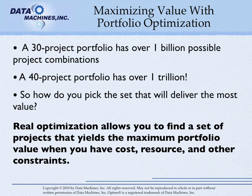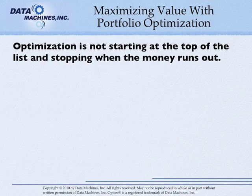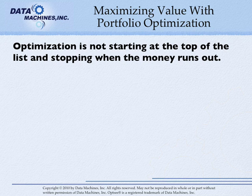Real optimization allows you to find a set of projects that yields the maximum portfolio value when you have cost, resource, or other constraints. Some project portfolio management applications optimize against cost by simply starting at the top of the project list and stopping at the point where the money runs out. That is not optimization at all.